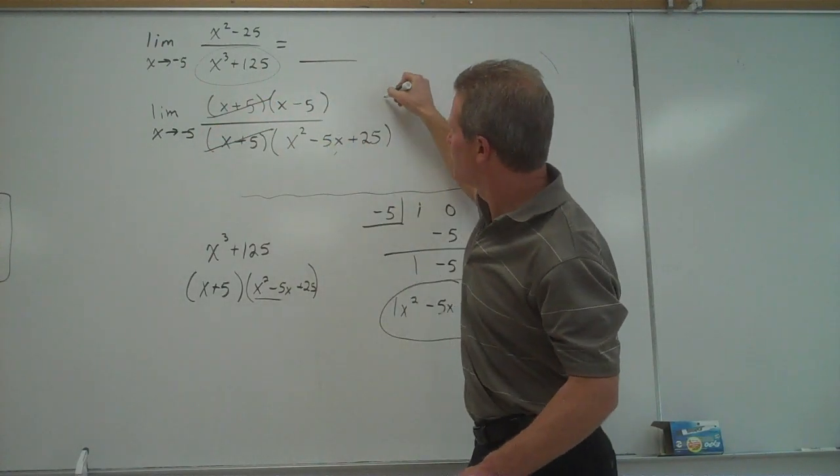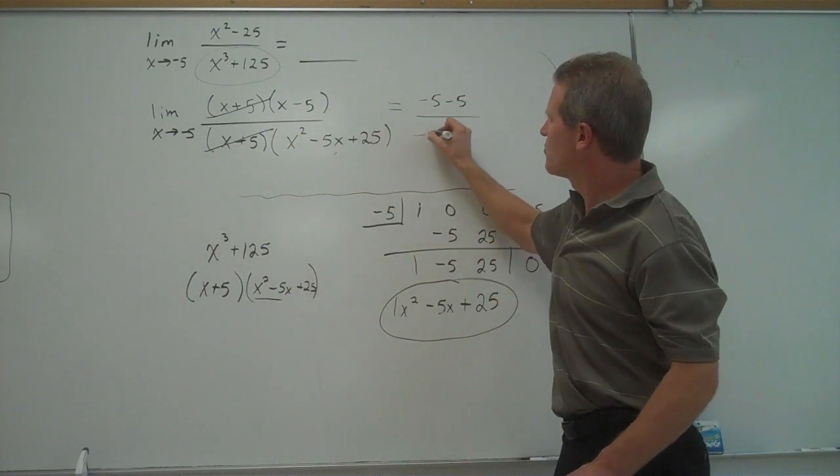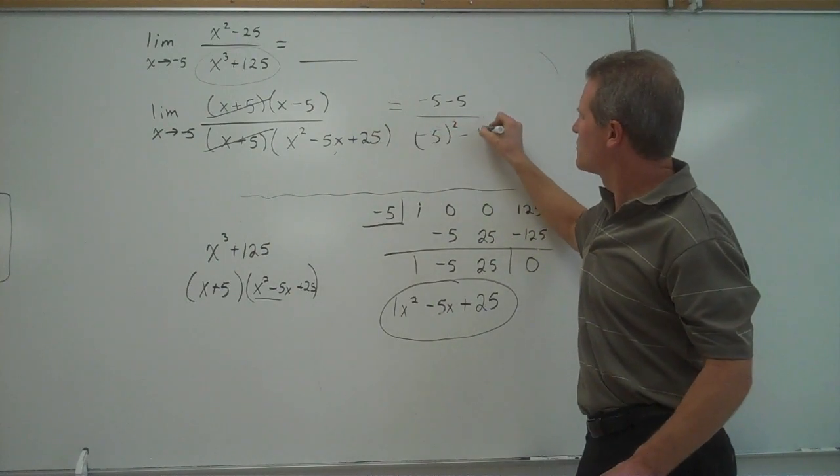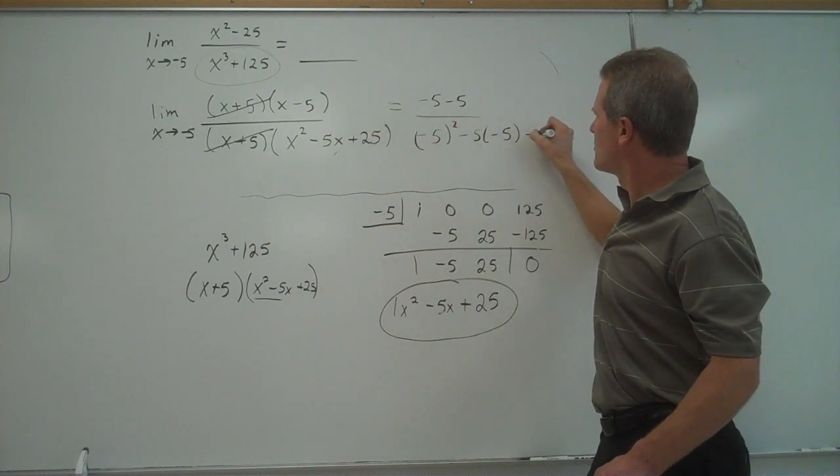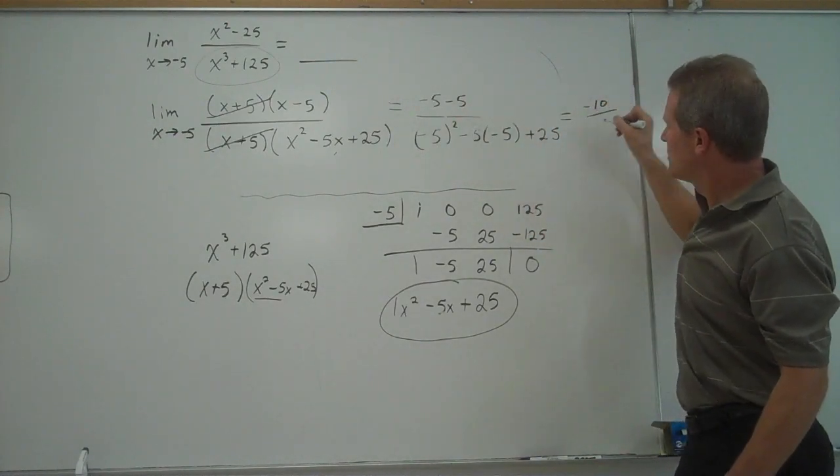now plug in negative 5. So I'll have negative 5 minus 5 over negative 5 squared minus 5 times negative 5 plus 25. The top answer will be negative 10 in my numerator.